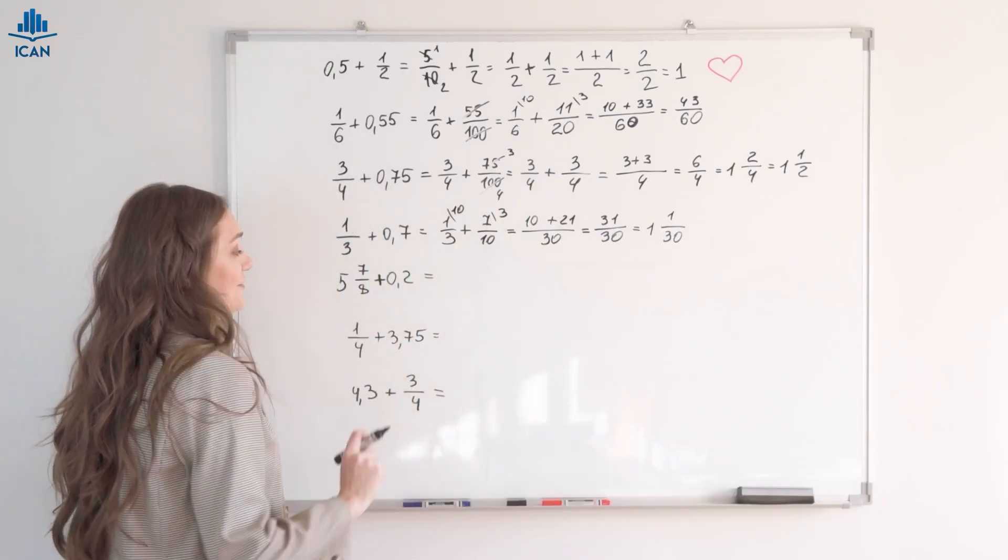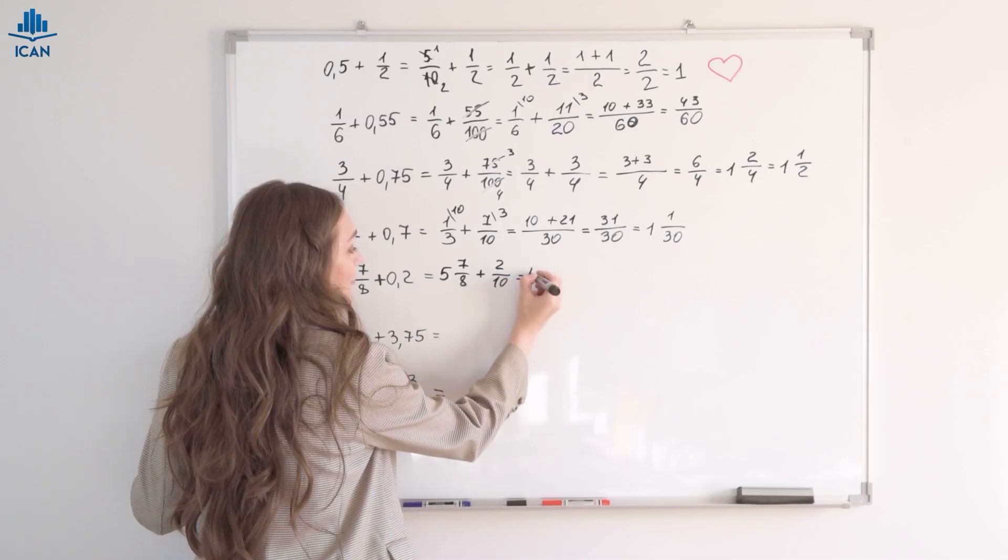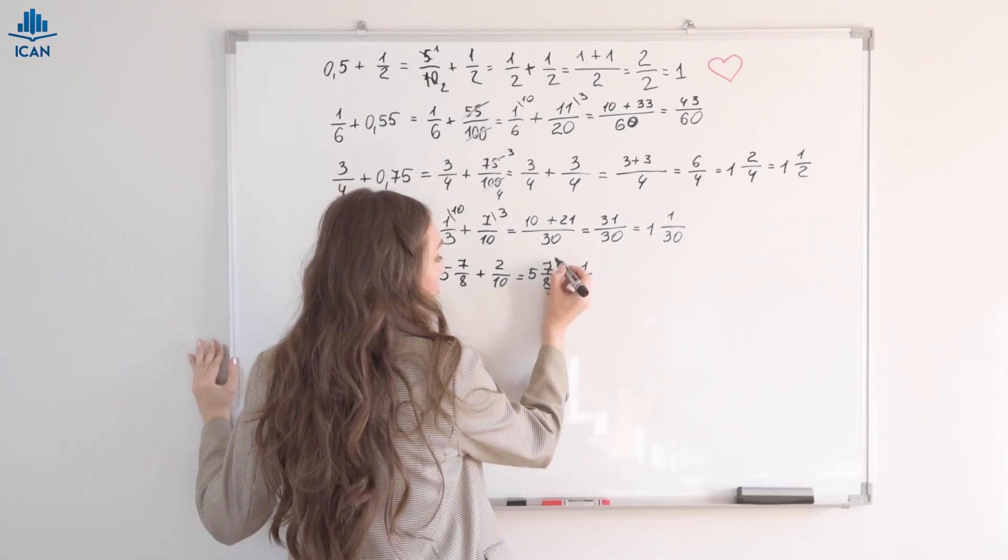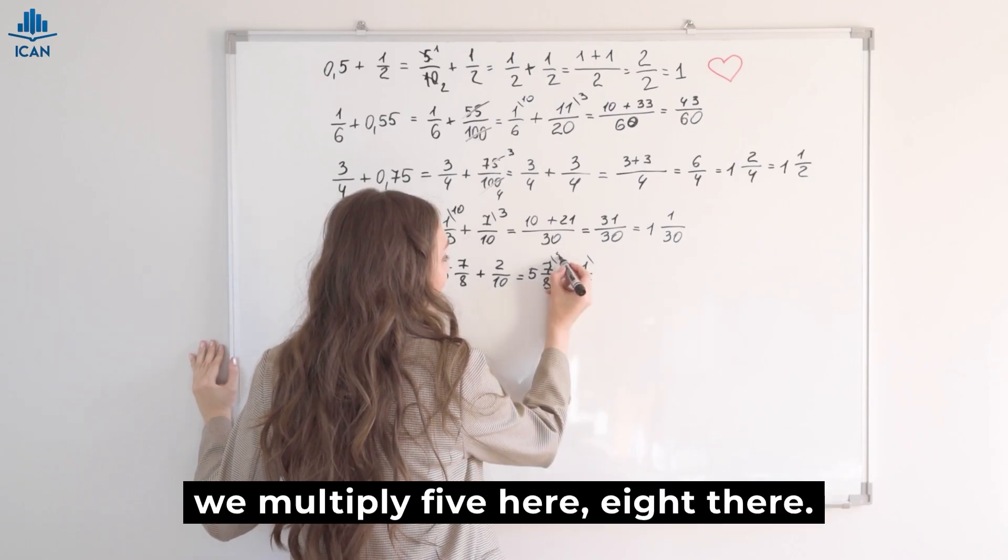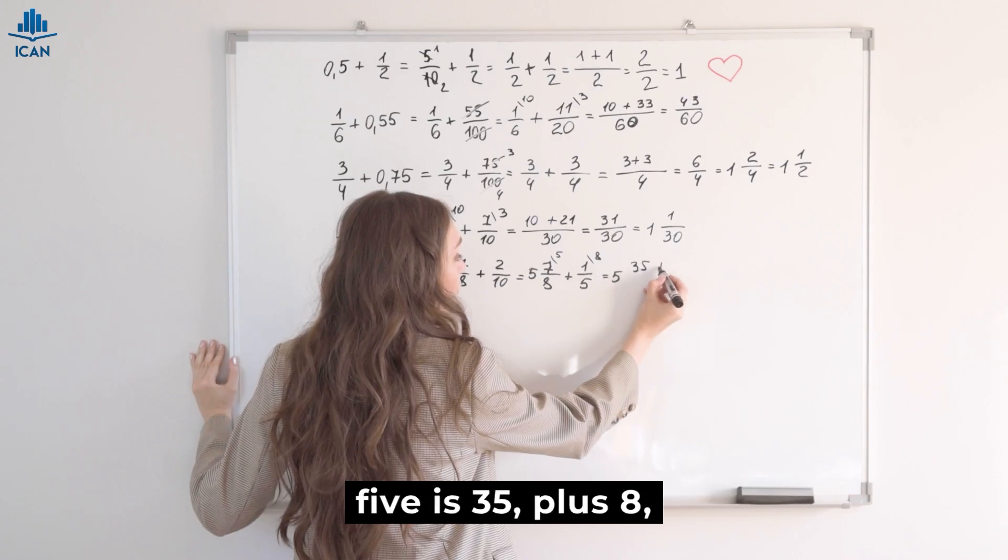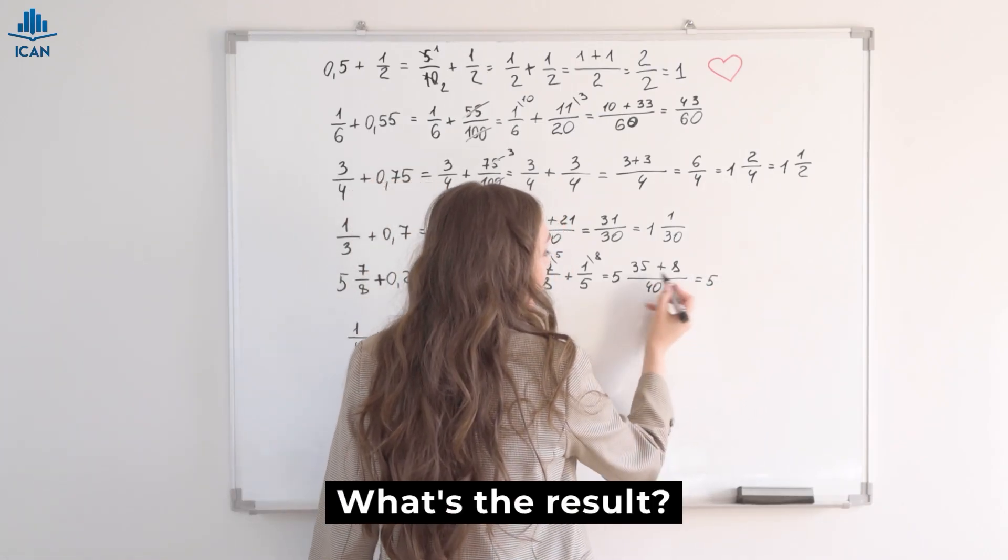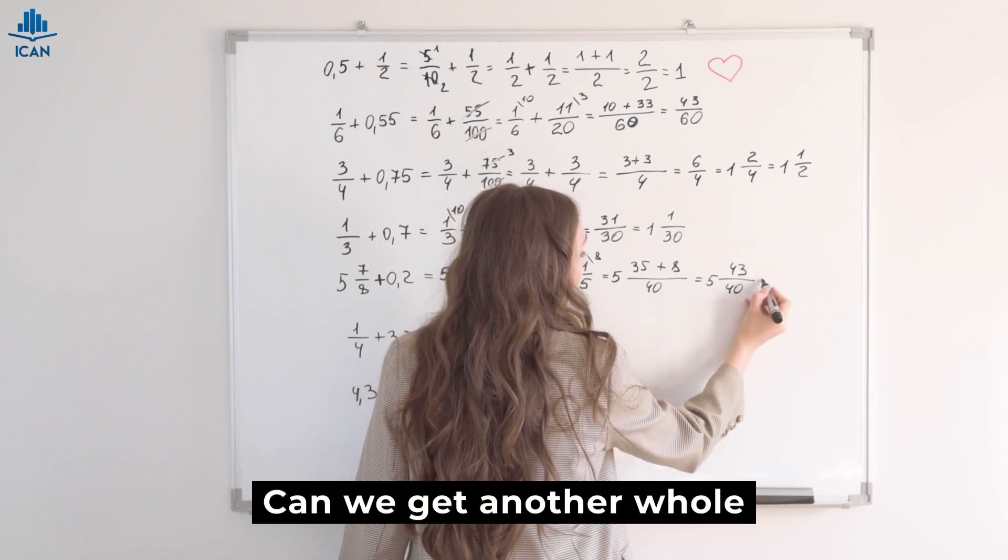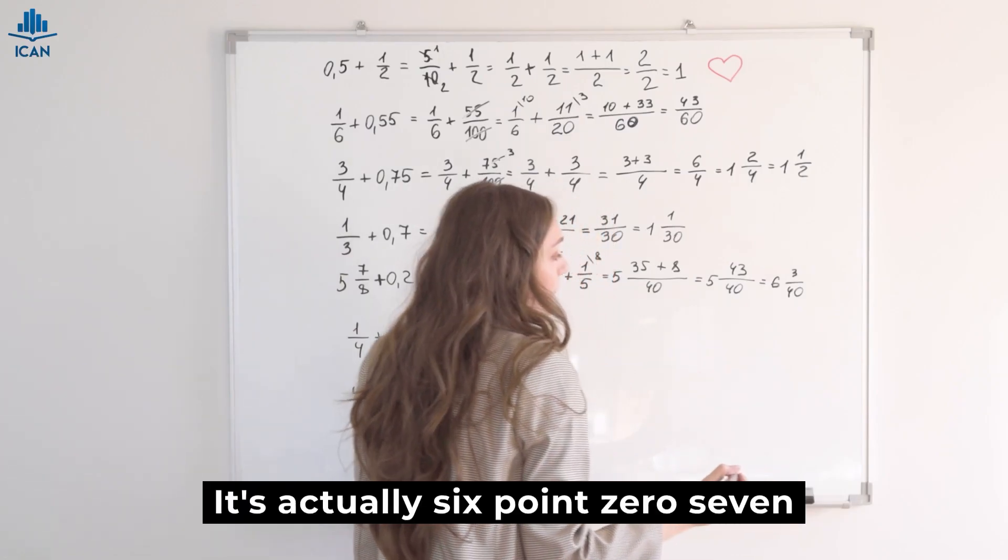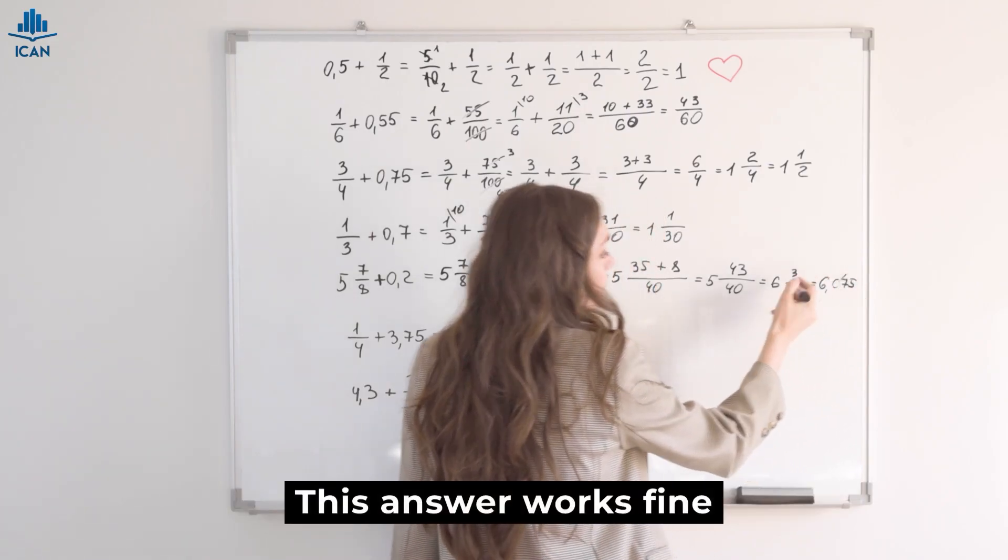Five and seven-eighths and two-tenths. Five and seven-eighths plus two-tenths. Five and seven-eighths plus one-fifth. Let's use a common denominator of forty. Okay, so we multiply five here, eight there. How much is five whole? Seven times five is thirty-five plus eight. Divide by forty. We get five whole. What's the result? Forty-three-fortieths. Can we get another whole part? We get six, not five. Three-fortieths. It's actually 6.075. But that's not important right now. This answer works fine as is.